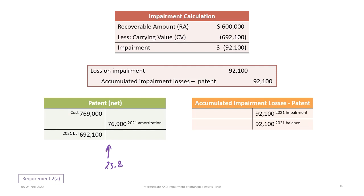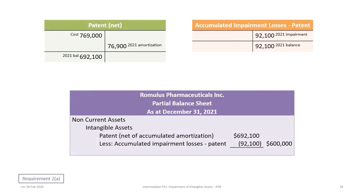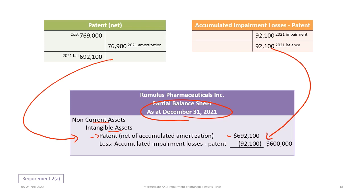What is different from the ASPE tutorial is the amount of impairment, which is $92,100. After booking the impairment, the accumulated impairment losses account for the patent is $92,100. Combining the T-accounts, the carrying value is $692,100 from the patent net, less accumulated impairment losses, giving an actual carrying value of $600,000. On the partial balance sheet at December 31st, 2021, intangible assets show patent net $692,100 less accumulated impairment losses $92,100, for a presented carrying value of $600,000.